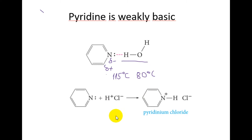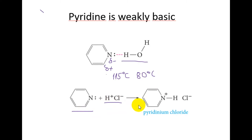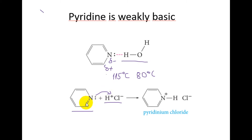Pyridine is weakly basic. It does react with strong acids to form pyridinium salts. For this reason, pyridine is often used as a scavenger in acid-producing reactions, for example in the reaction of thionyl chloride with alcohols.